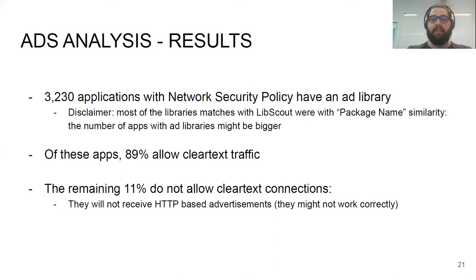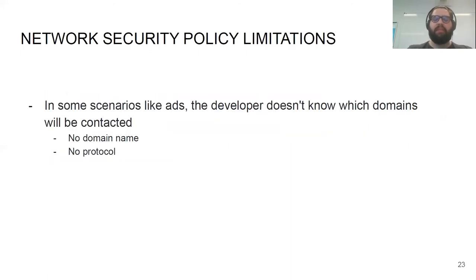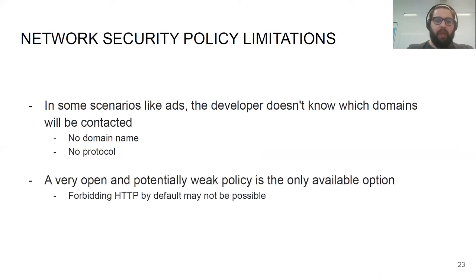The remaining 11% simply do not allow any clear text connection. This means that when these applications try to reach a domain through HTTP, it may not work, leading the application to behave incorrectly with undefined behavior. This highlights a fundamental limitation of the network security policy configuration: in scenarios like third-party advertisement libraries, the developer doesn't know in advance which domains will be contacted, nor the protocol the library will use.